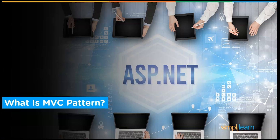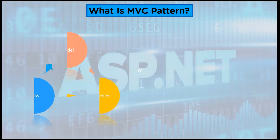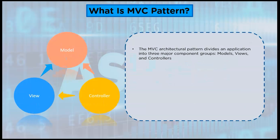What is MVC pattern? The Model-View-Controller MVC architectural pattern divides an application into three major component groups: Model, View, and Controller. The principle behind developing MVC is the separation of concerns. This principle implies that software should be classified based on the type of task it performs.